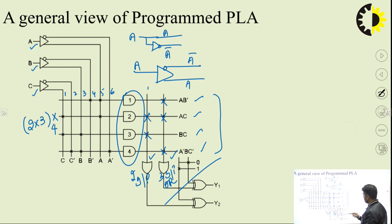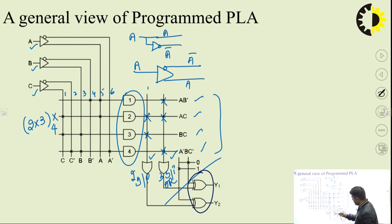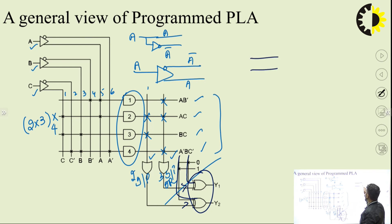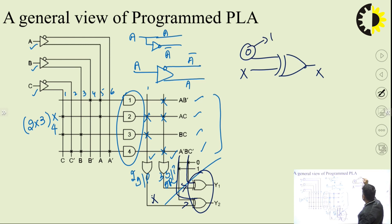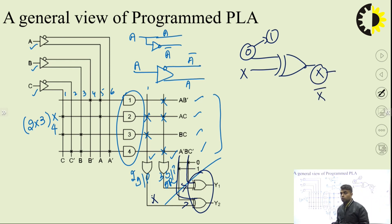An additional programmability feature uses XOR gates after the OR outputs. One input of each XOR gate is controlled by 0 or 1. If the control input is 0, the output equals the OR output X directly. If the control input is 1, the output equals X' (complement). This allows generating either true or complemented outputs, adding one more level of programmability beyond the OR array.